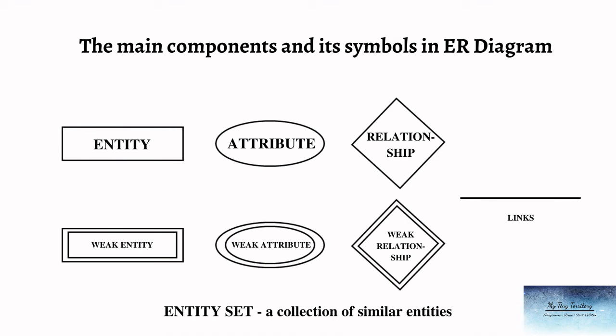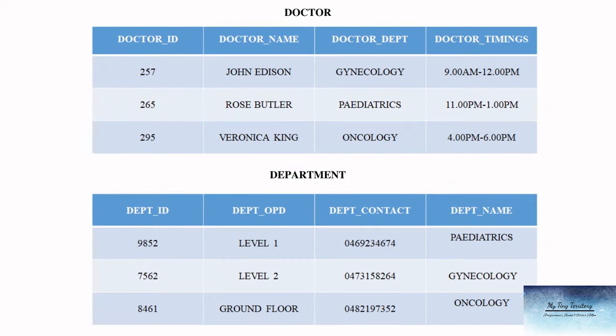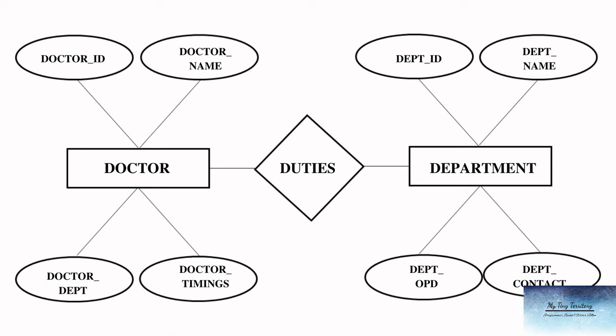An entity set is a collection of similar entities. As you see on the screen we have two tables: one for the entity doctor and another for the entity department. We have attributes like doctor ID, doctor name, doctor department, and doctor timings, and similarly for the department table we have department ID, department OBD, department contact, and department name. The entities doctor and department are represented in rectangles, the relationship between doctor and department — duties — is represented by a diamond, the attributes for both entities are represented in ellipses, and the lines show the relationships between the different entities and their attributes.